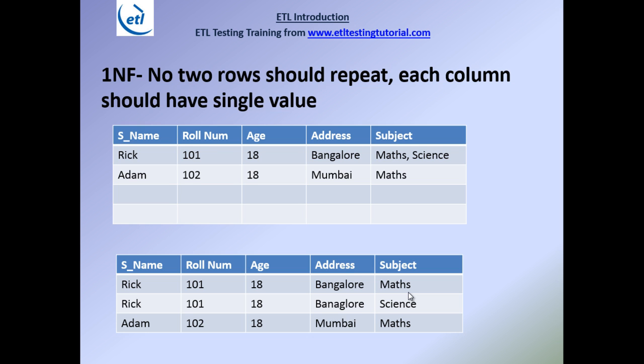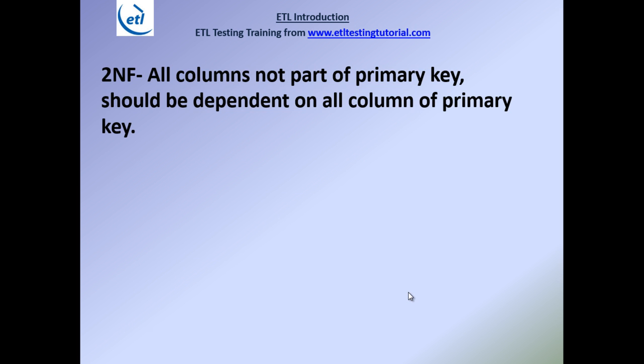Second Normal Form says: all columns that are not part of the primary key should be dependent on all columns of the primary key. Also, to apply 2NF your data must already be in First Normal Form. A primary key is the column — or combination of columns — that is unique, cannot be null, and uniquely identifies a row. The primary key can be built on one column, two columns, or even three columns concatenated together.